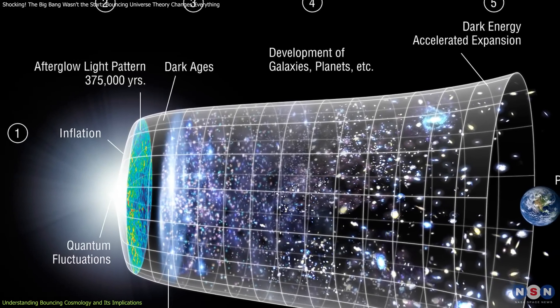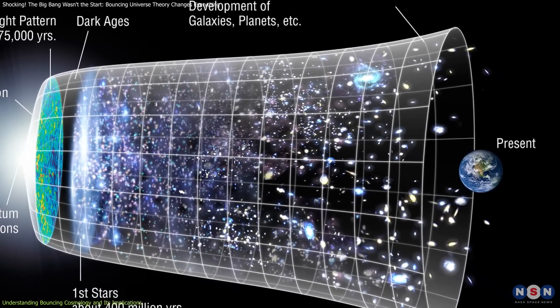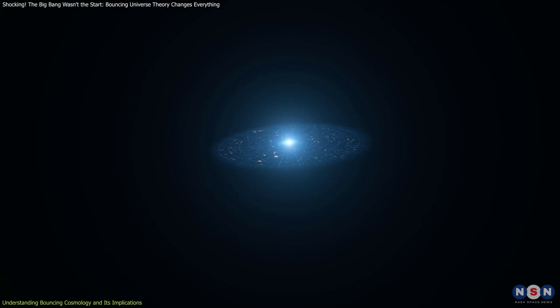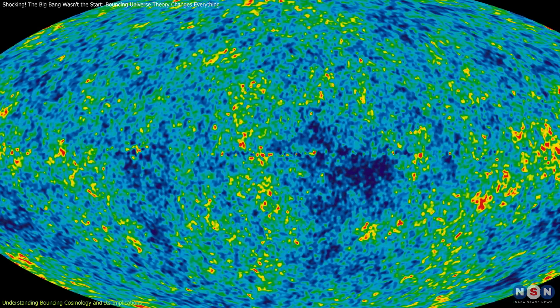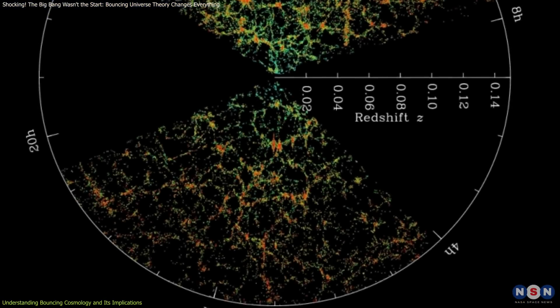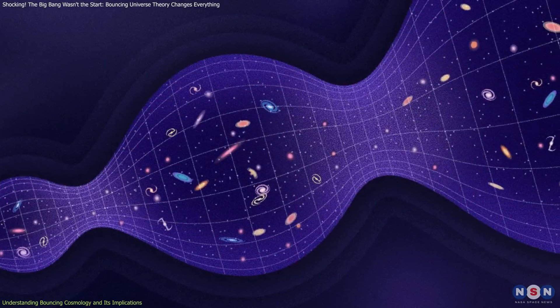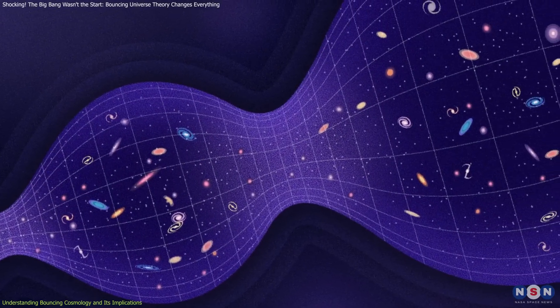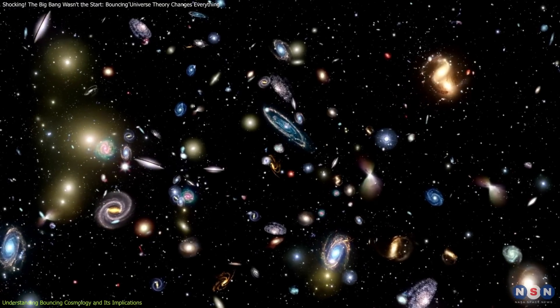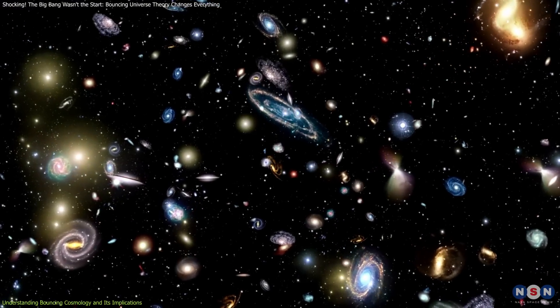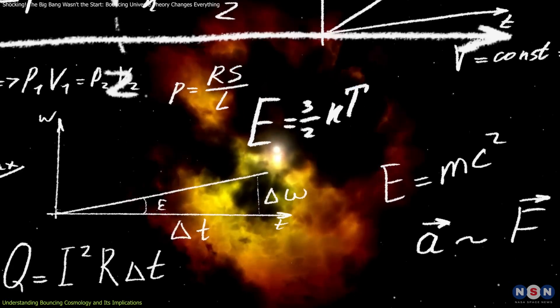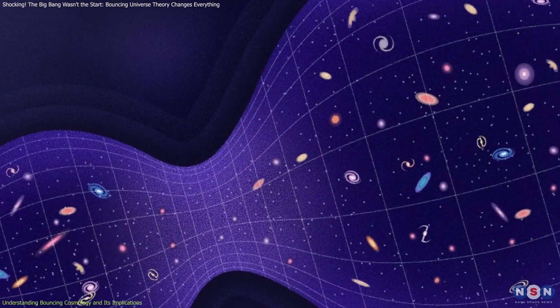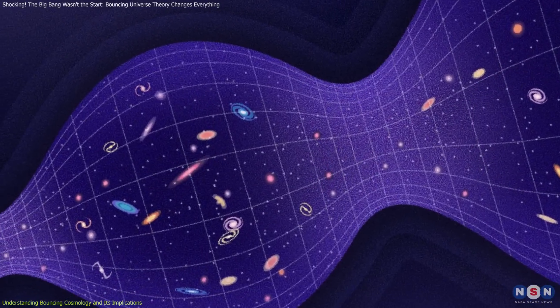To grasp the significance of this theory, it is essential to consider the limitations of the Big Bang model. While the Big Bang theory provides a robust explanation for the observable expansion of the universe and the cosmic microwave background, it leaves unresolved questions about the cause of the initial singularity and why the universe appears so uniform on large scales. Bouncing Cosmology offers an alternative perspective by suggesting that the universe's current state is merely one phase in an infinite cycle.